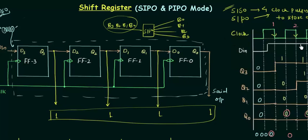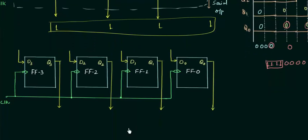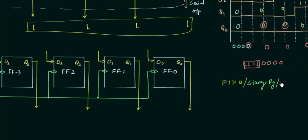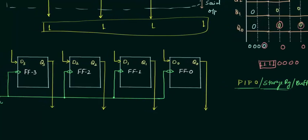Now we move to parallel input parallel output mode. It is a very simple yet very important configuration in the shift register. I will call parallel input parallel output the storage register and also the buffer register. Depending upon the application, we divide registers into two types: shift registers and storage registers. The storage register is nothing but the parallel input parallel output shift register, also called the buffer register.